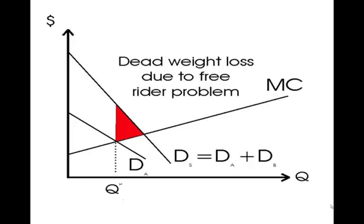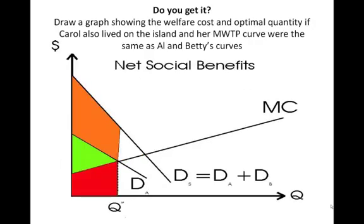To check that you understand how this plays out in this simple theoretical model, take a piece of paper and draw the demand curve for Al and the demand curve for Betty and stack them up as we've done here. Now assume there's another person on the island, Carol, who also gets benefits from this public good. How does the socially efficient quantity change, and how does the welfare cost change? You should find that the welfare cost increases as we increase the number of people on the island.